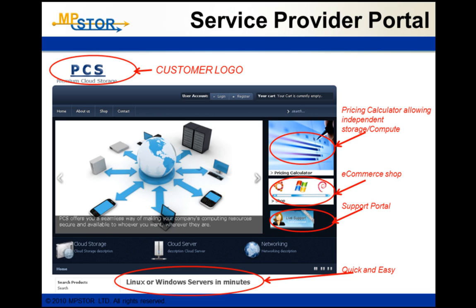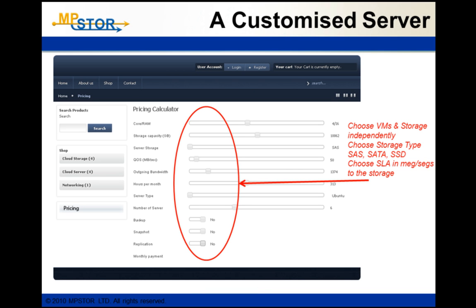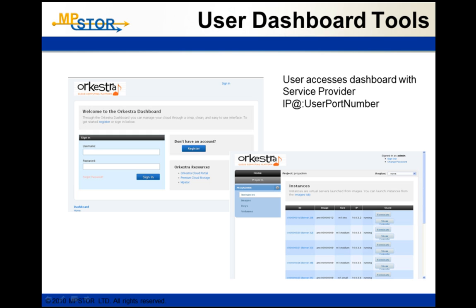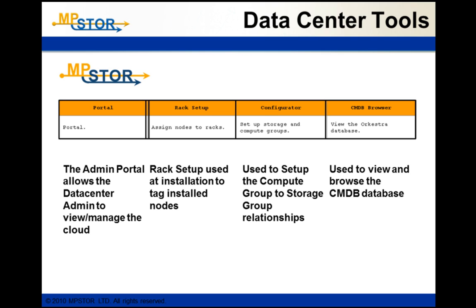Additional parts of the Orchestra package include the service provider portal, which helps service providers get up quickly with a user-facing portal. That user-facing portal allows the user to configure his virtual machine. Unlike the competition, you can independently select your cores, your storage, and your operating system. Additional features include backup, snapshot, and replication as part of the package. The user also has his own dashboard, similar to the OpenStack dashboard but enhanced with additional features that aren't available in standard OpenStack.